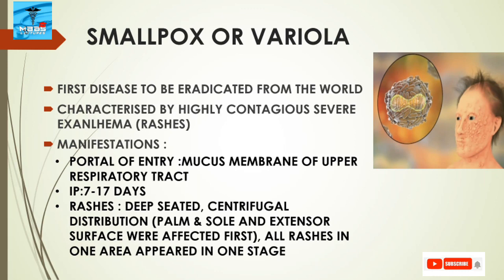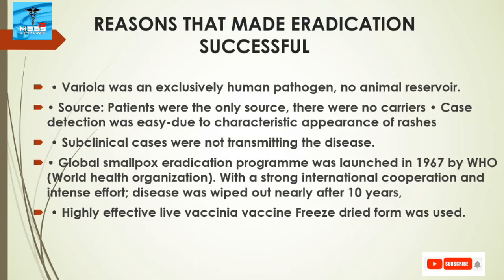The characteristic feature of smallpox rashes is that they are deep-seated and all rashes in one area appear at the same stage, meaning evolution is very slow. They have a centrifugal distribution — palms and soles and external surfaces were affected first.